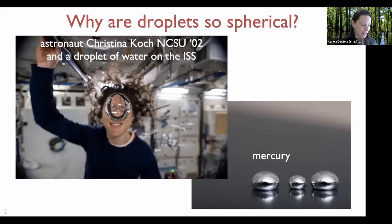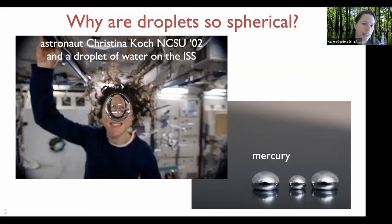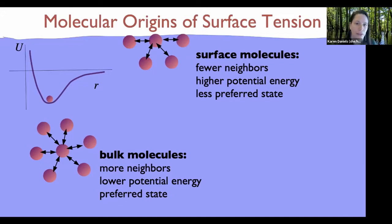I'm going to start with a little bit of surface tension discussion, because not everybody who works in fluid dynamics thinks about interfacial flows. The simplest question is: why are droplets so spherical? This is actually an alum from my university — Christina Koch on the space station — showing a very nicely circular droplet acting as a lens. If you've ever played with mercury here on earth, they're actually quite remarkably spherical because of their very high surface tension.